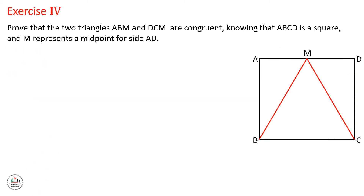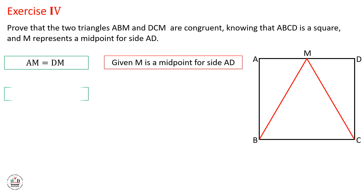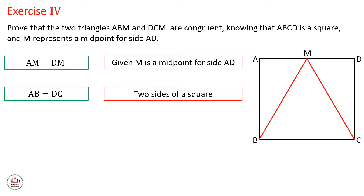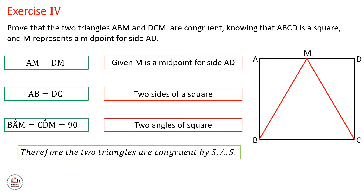Exercise 4: Prove that the two triangles ABM and DCM are congruent, knowing that ABCD is a square and M represents a midpoint for side AD. So AM equals DM, because M is a midpoint for side AD. We start with the easiest given: AB equals DC, as two sides of a square. And angle BAM equals angle CDM — again, two angles of the square equal to 90 degrees. Therefore, the two triangles are congruent by Side-Angle-Side.